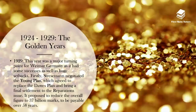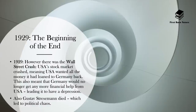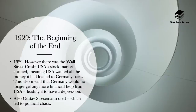However, by 1929 there was another major turning point for Weimar Germany, because although it had some successes, it also had huge setbacks. Stresemann negotiated what was called the Young Plan, which agreed to replace the Dawes Plan and bring a final settlement to the reparations issue. It proposed to reduce the overall figure of reparations to 37 billion marks to be payable over 58 years. However, things started going bad. In 1929, this was also the infamous year of the Wall Street Crash — the USA's stock market crashed, meaning the USA wanted all the money it had loaned to Germany back, and could no longer afford to support Germany economically. This also meant that Germany consequently had a depression. Another huge event that happened was that Gustav Stresemann died — he was a key unifying political figure for both the left and the right — and this therefore led to political chaos.